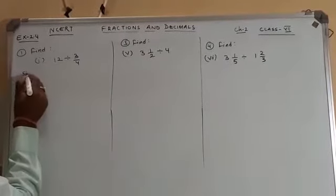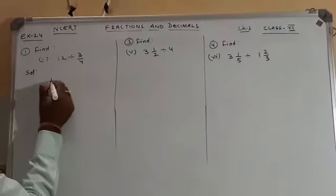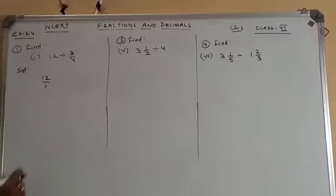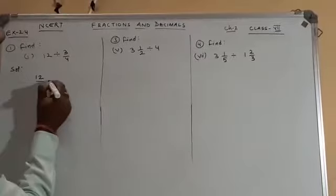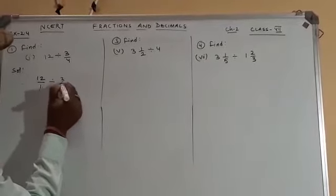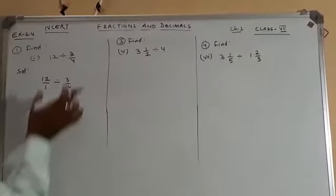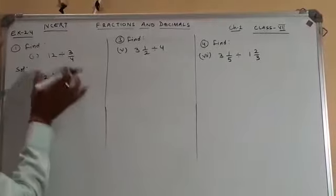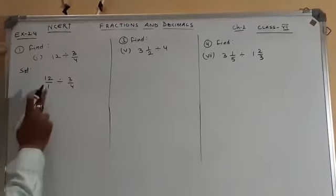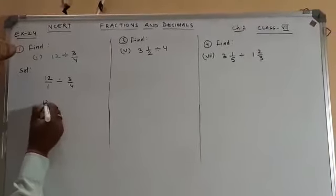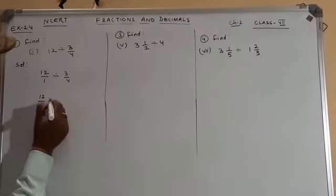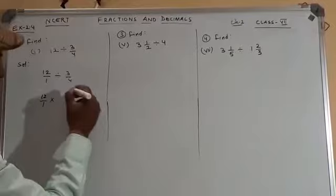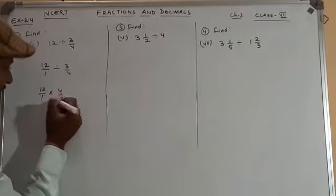So let's see the solution. First of all, you will write 12 upon 1. If nothing is there in the denominator, take it as 1. The divide sign is there, then write 3 by 4. We have written the question like this. Now write again 12 upon 1. This divide sign will become multiply, and we write the reciprocal of the fraction, which becomes 4 upon 3.